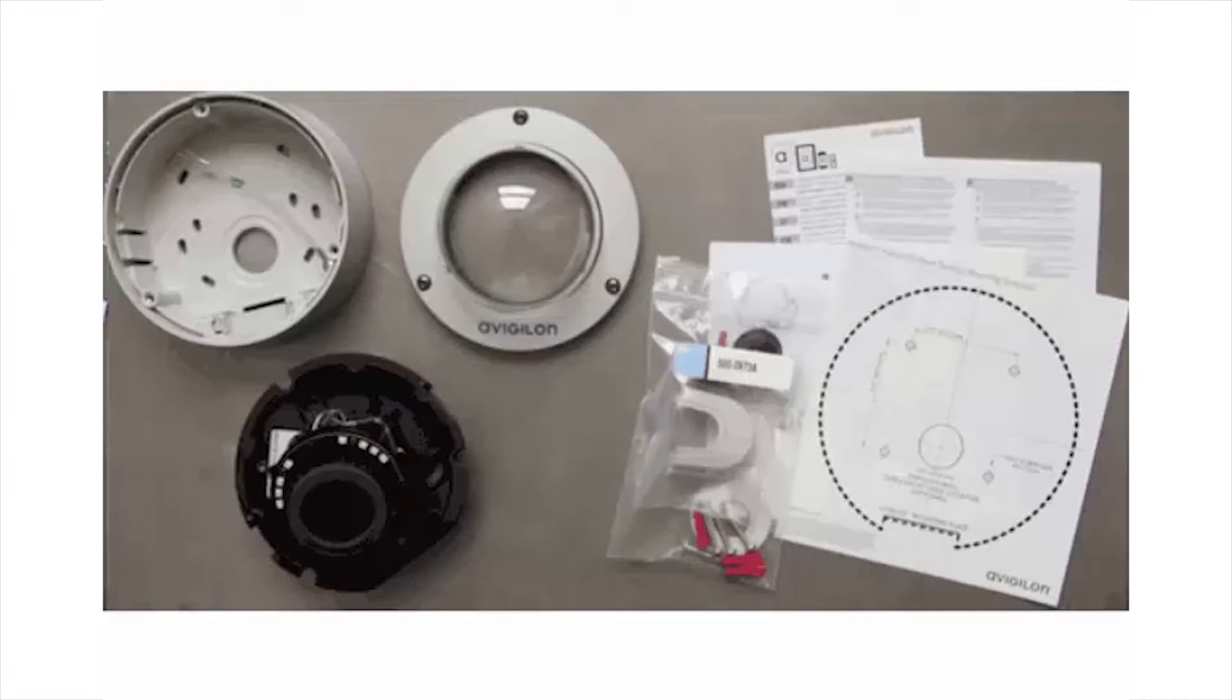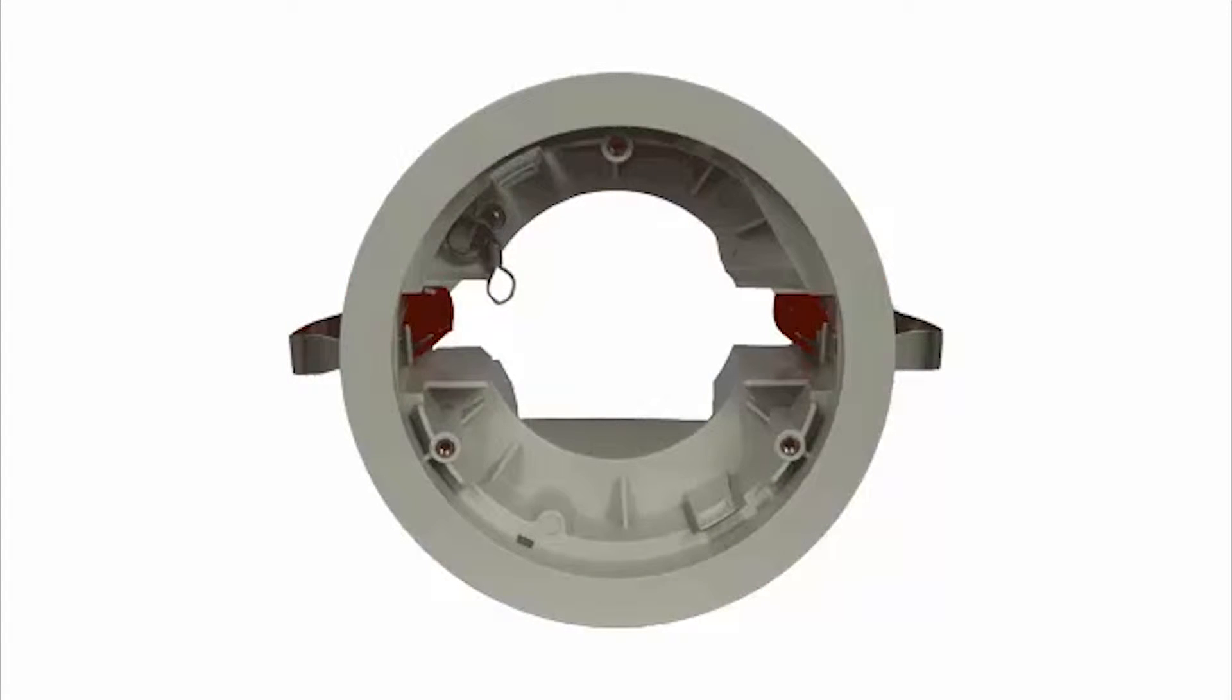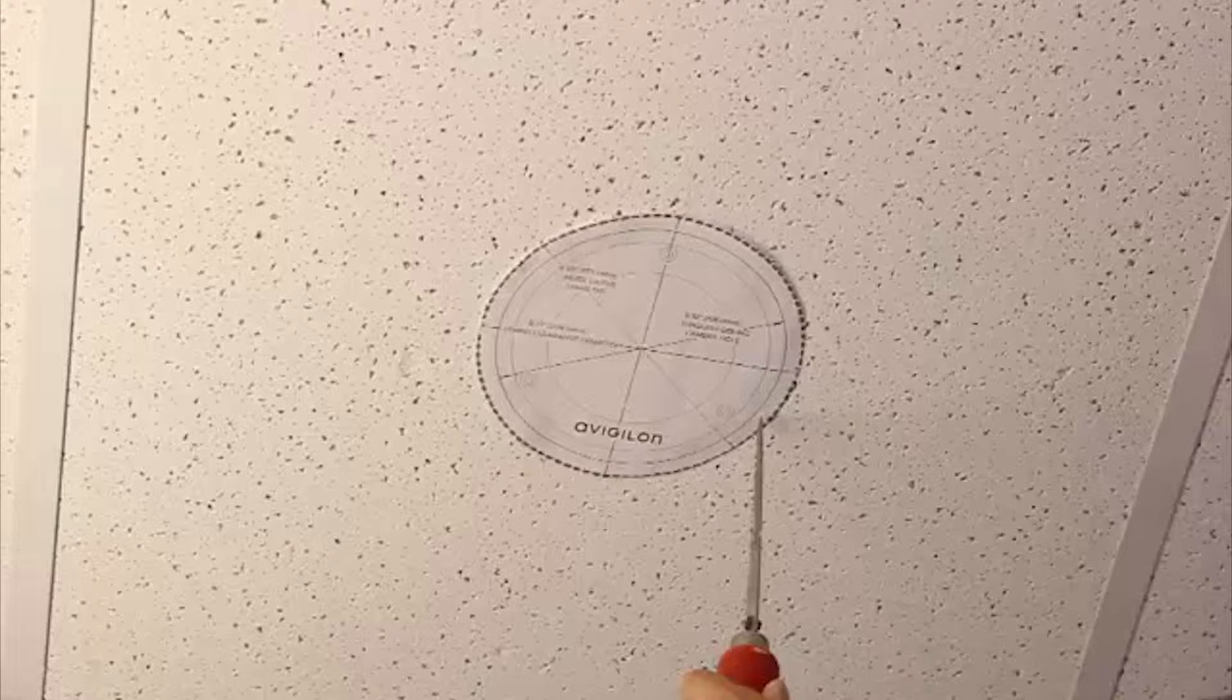If you need to install the dome camera into a ceiling, you can discard the surface mount adapter and use the in-ceiling mounting adapter instead. Note that the ceiling cannot be thicker than 32 millimeters or 1.5 inches.